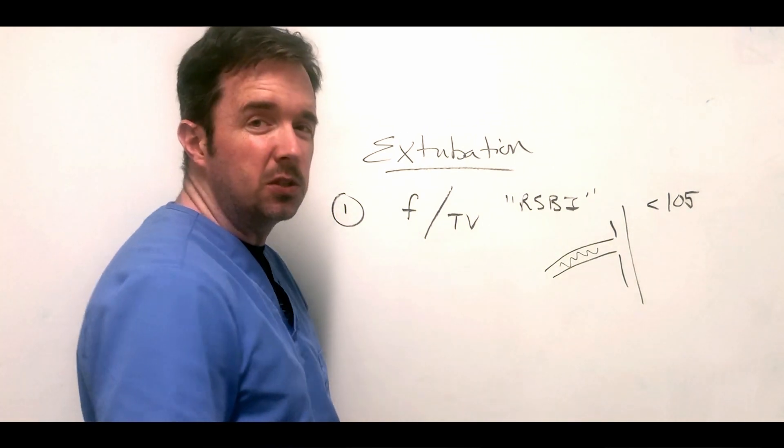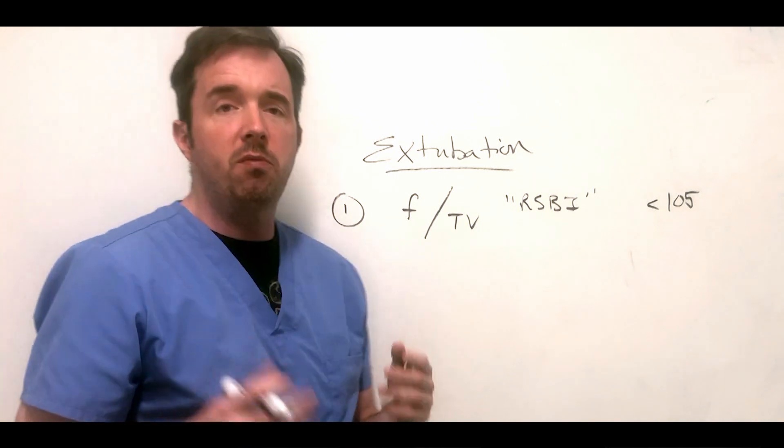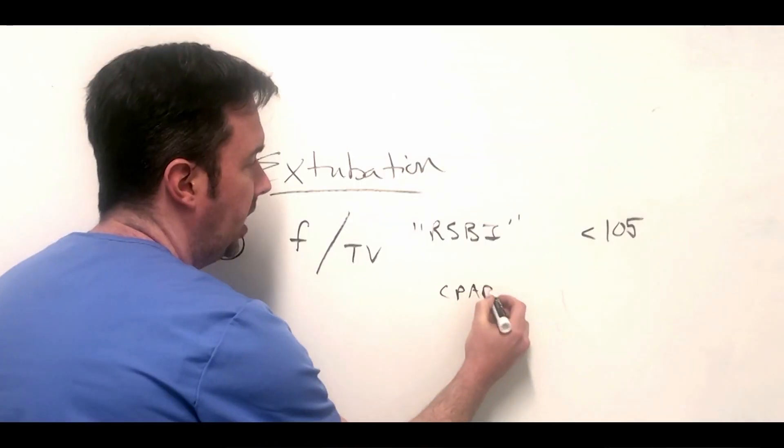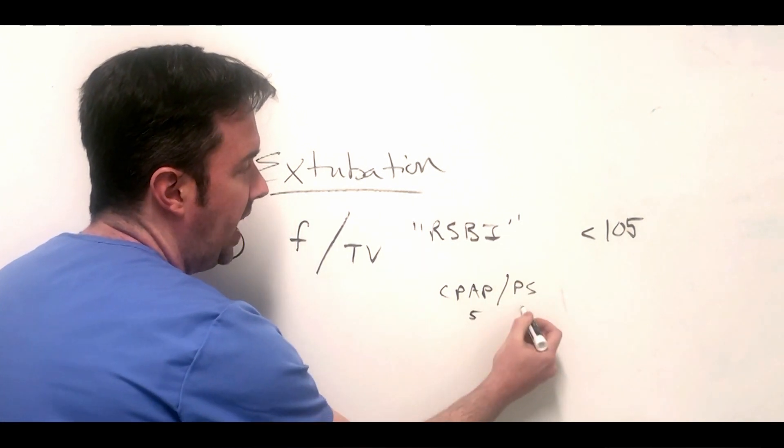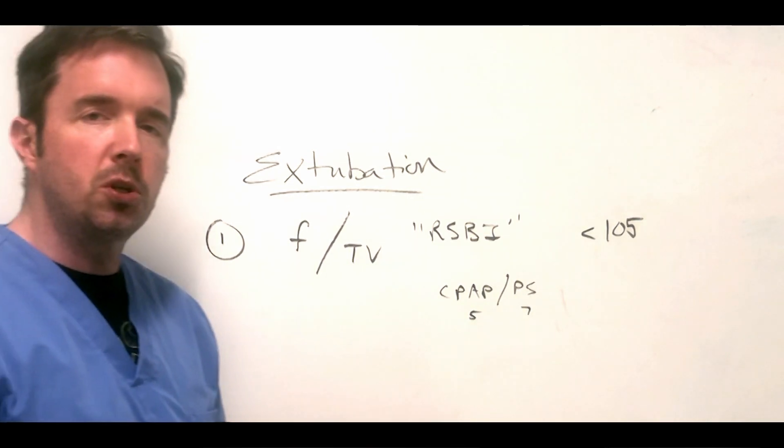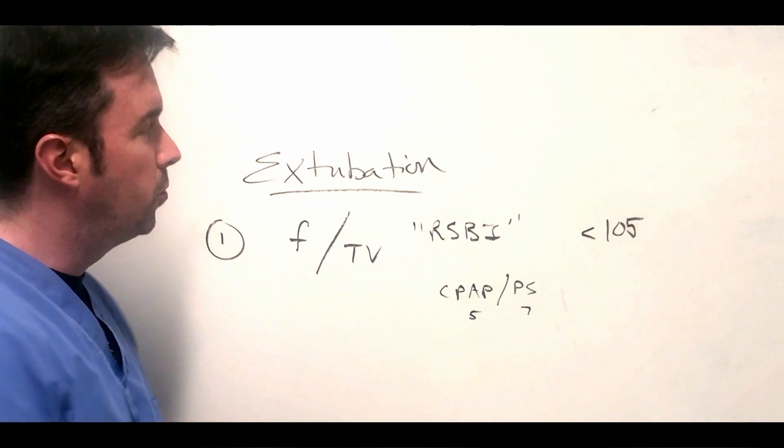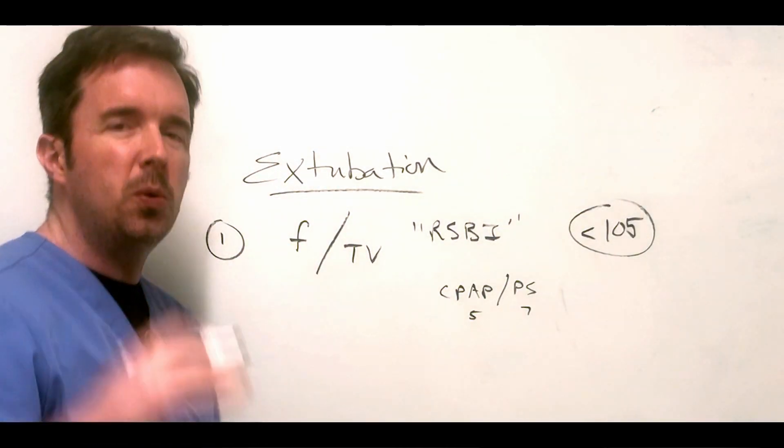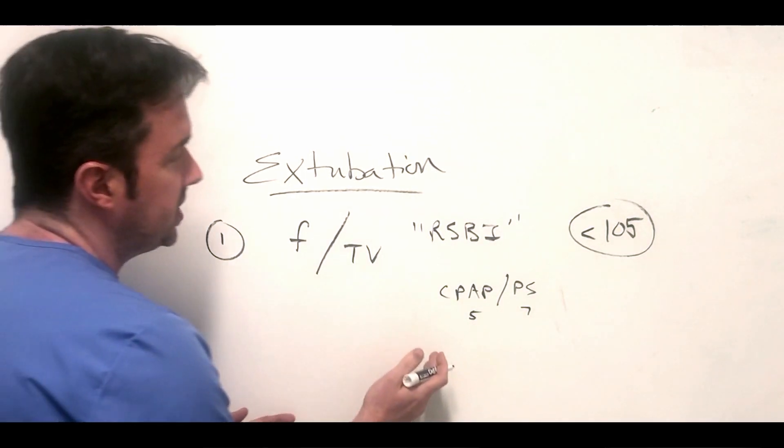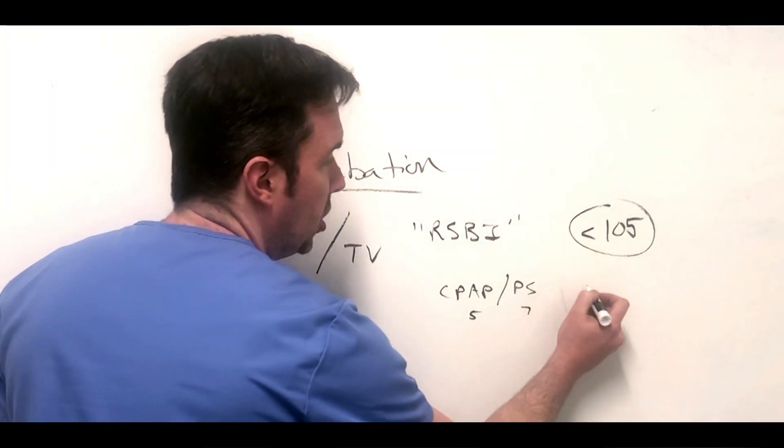The RSBI in reality - we don't have patients on T-pieces very much when it comes time to extubating them. We often extubate them off of a very low setting, say for example CPAP and pressure support. CPAP is typically about 5 and pressure support anywhere from 5 to 10. When patients are on CPAP pressure support, they're getting a little bit of extra help with each breath, so the RSBI number of 105 may be a little bit too high.